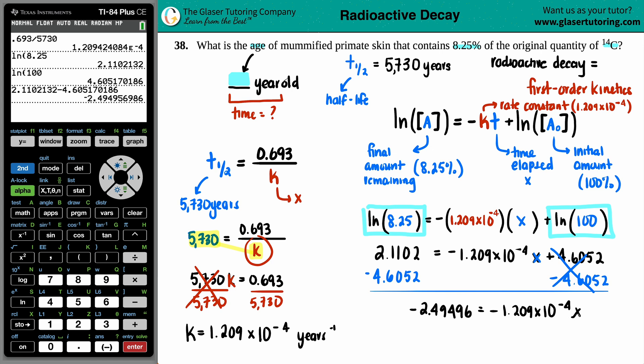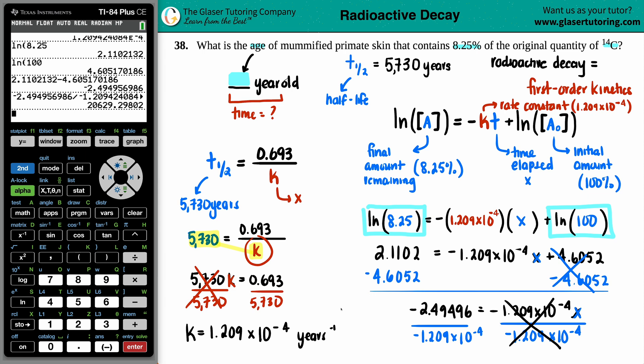And now we have, so I'm going to do the full answers here. So this minus this, we get a negative value, but that's okay. Negative 2.49496 equals negative 1.209 times 10 to the negative fourth times X. So if we want to solve for X, all we got to do is just divide by this negative value. And that is going to tell us how many years have gone by. I need this value. This is the K value. So I'm going to say negative and then grab that K value all the way from up here.